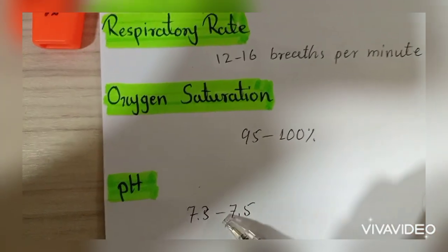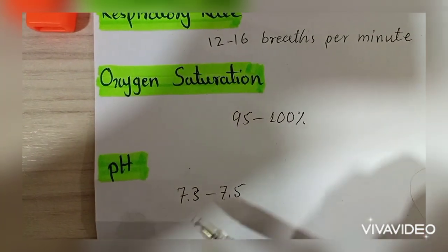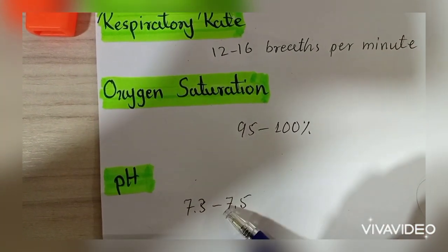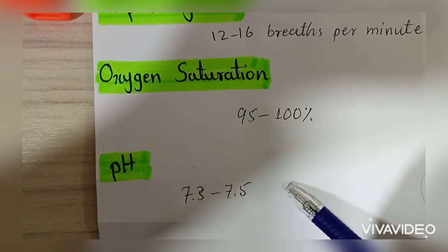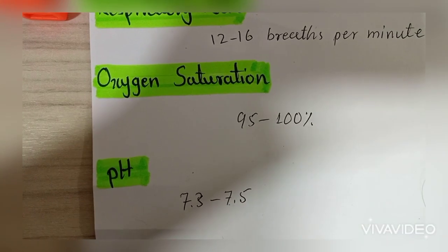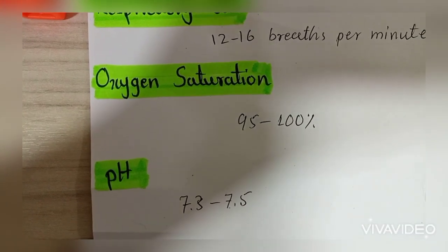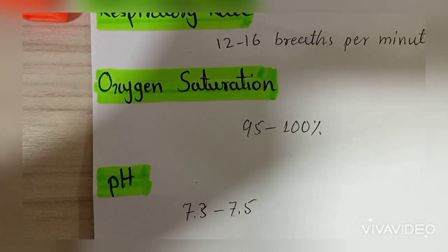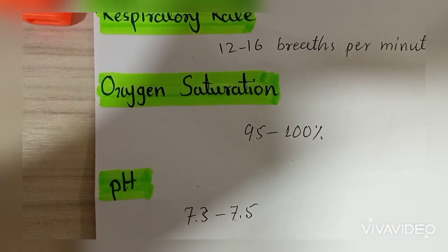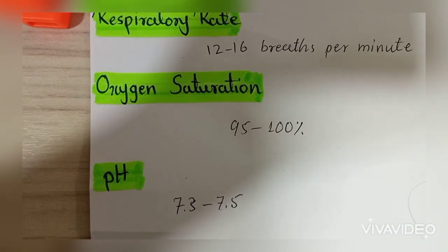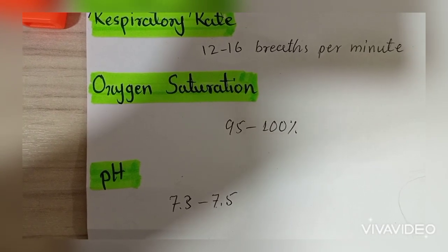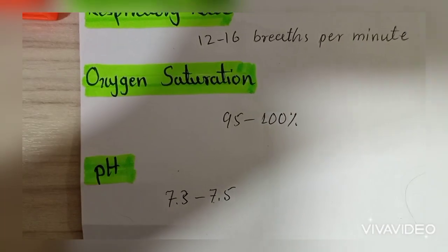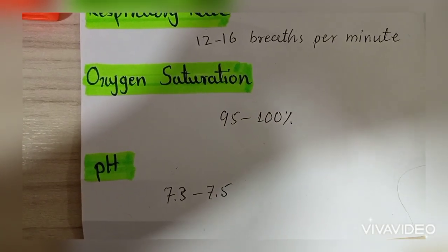Then there is pH. 7.3 to 7.5 is the normal pH of the human body, as most of the enzymes present in the human body have the optimum pH at this range.